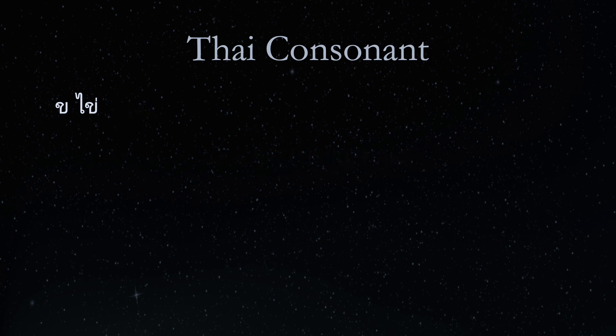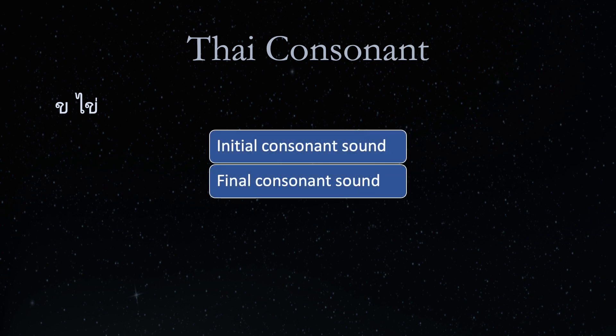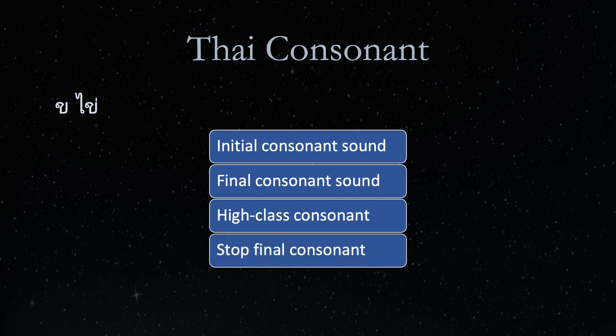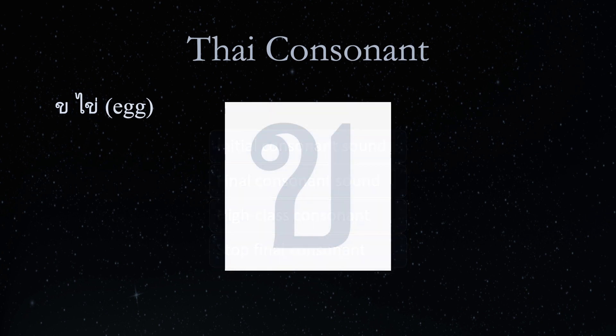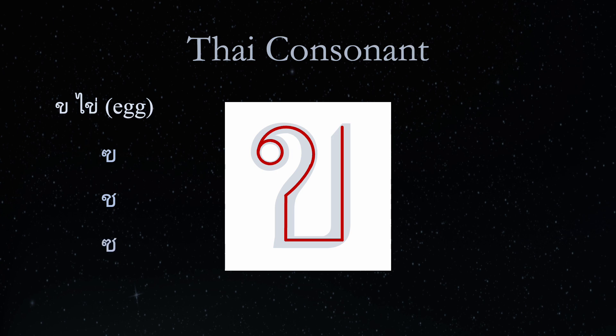That is the consonant Kho Kai, which we can summarize as a consonant that sounds like a K at the beginning and end of a syllable. It is a high-class consonant and a stop final consonant. The accompanying word Kai means egg. Kho Kai is written like this and looks like these letters of the Thai alphabet.